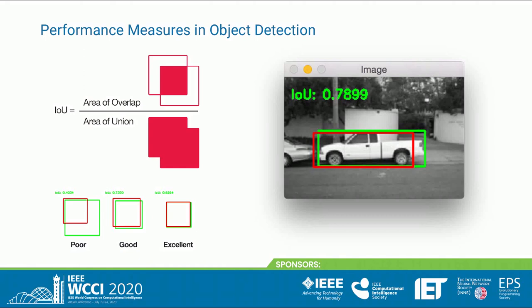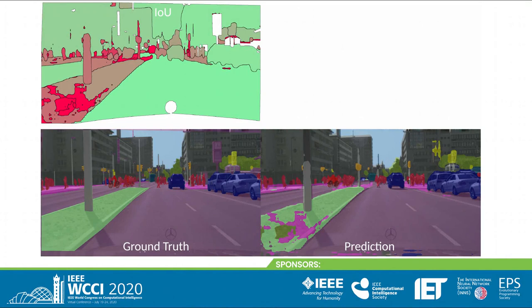A very common performance measure in object detection is the Intersection over Union, shorthand IOU, which measures the number of pixels in the overlap of two boxes divided by the number of pixels in the union of two boxes. For example, when the green box is the ground truth and the red box is a prediction, an IOU of 0.79 represents a good result. The IOU is between 0 and 1, where 1 means a perfect match. Since IOU is defined at the pixel level, we can transfer this concept to semantic segmentation and obtain a segment-wise IOU.